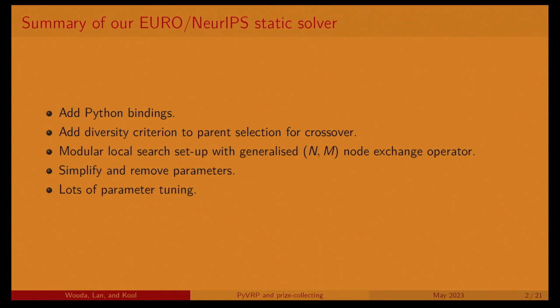We modified the local search — the educate step — a little bit. In particular, we got rid of a lot of code by generalizing the operators to general N-M exchange: taking a segment of N customers from one route, M customers from the other, and swapping them. A lot of operators are of that form. We also simplified things, got rid of a giant tool representation and a lot of things related to that. And we did a lot of tuning on the remaining parameters. Simple question: which of these parts do you think mattered most for our performance? Parameter tuning. Yes — that one and the simplification.